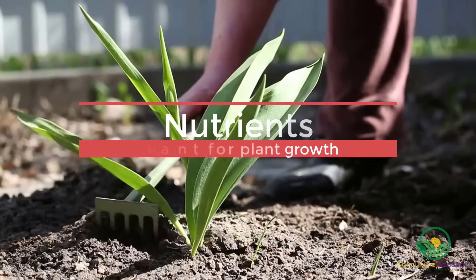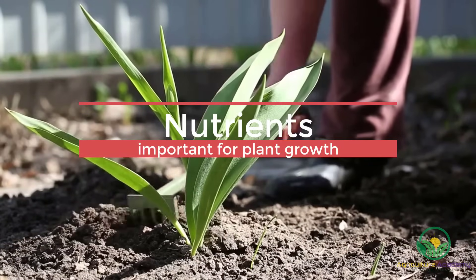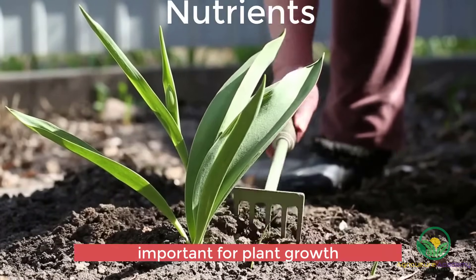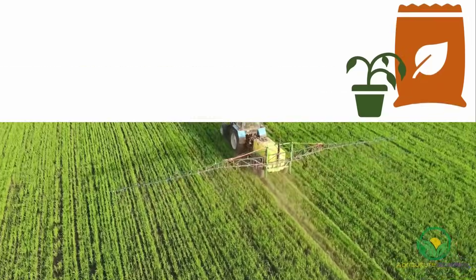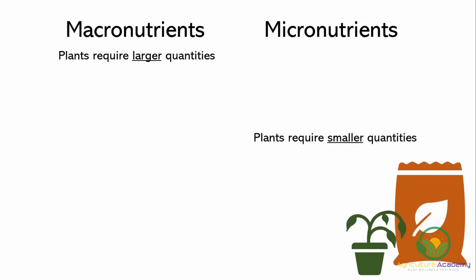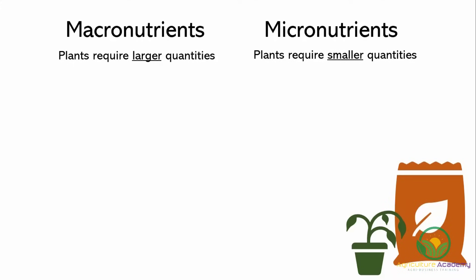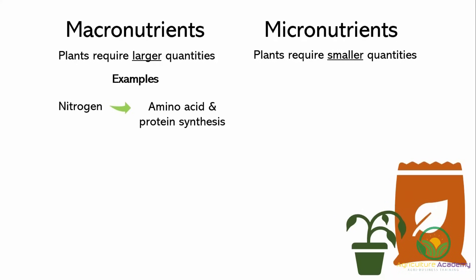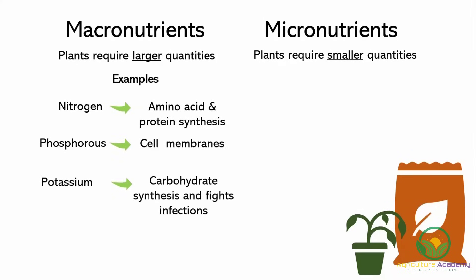Firstly, we are going to discuss what the most important nutrients are and why they are important for plants. Nutrients are classified as either macro or micronutrients. Plants require higher quantities of macronutrients and lower amounts of micronutrients. Examples of macronutrients include nitrogen, which is important for amino acid and protein synthesis, phosphorus, which helps form cell membranes, and potassium, which is important for carbohydrate synthesis and helps plants fight infections.